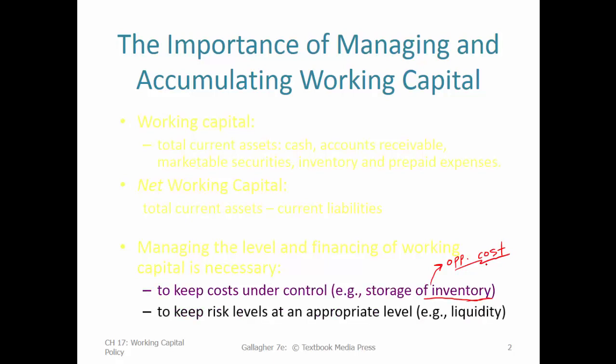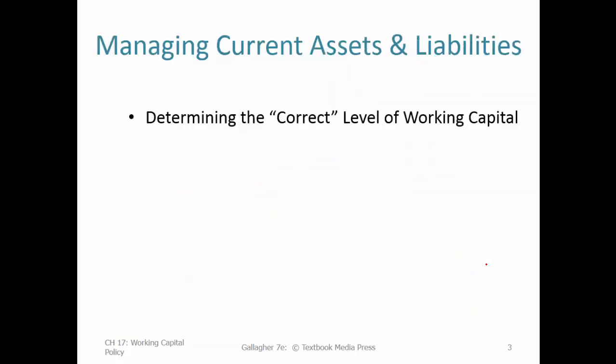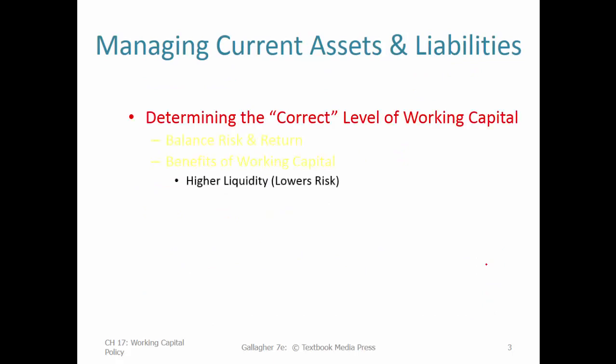We also want to keep risk levels appropriate — maintain enough liquidity to deal with situations that come up. Keep a cushion of cash to deal with contingencies; you don't want the cash level too low because you could be in trouble. You might have to sell off assets in a fire sale or obtain emergency lines of credit, which could be difficult. To determine the correct level of working capital, we have to consider risk and return, and then benefits and costs.